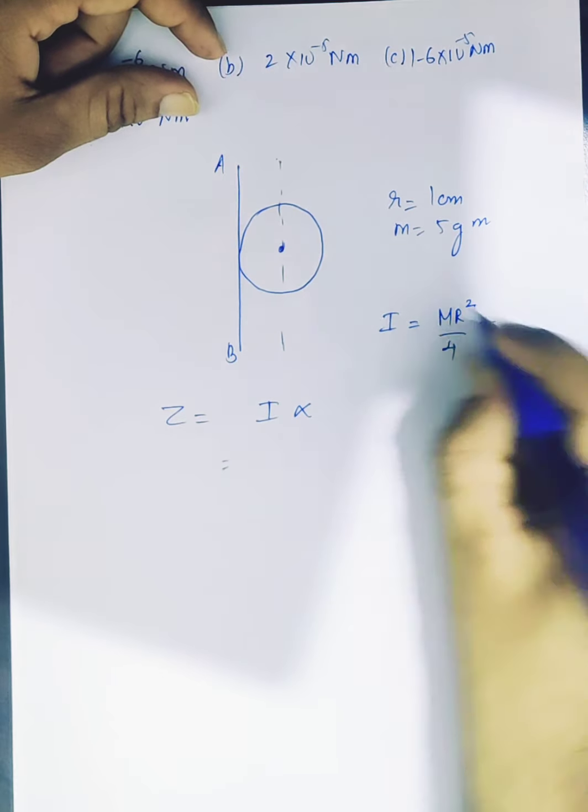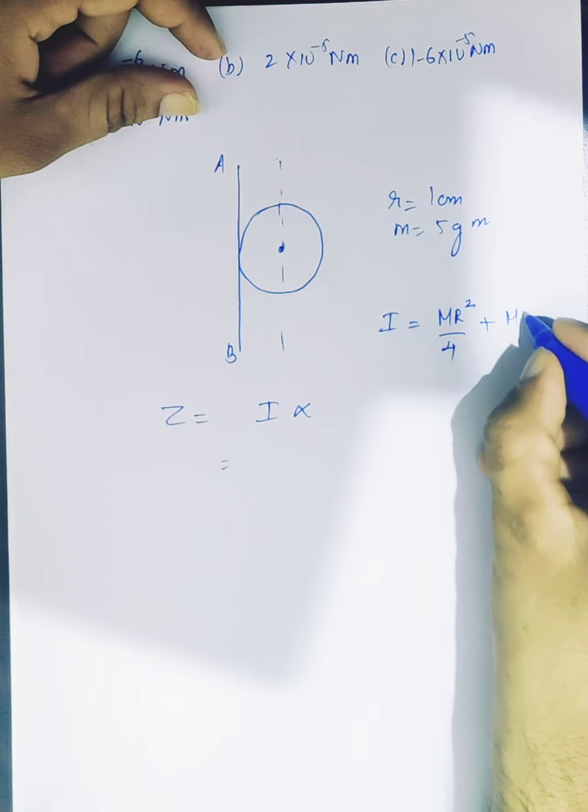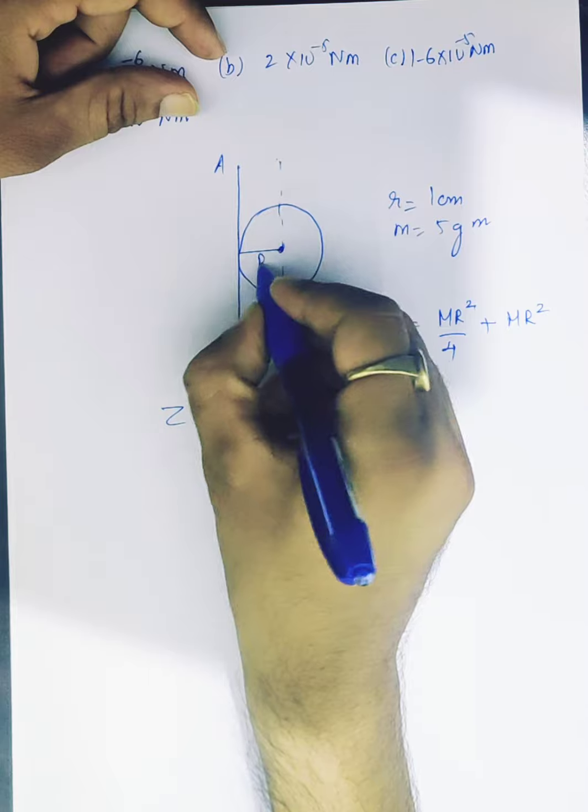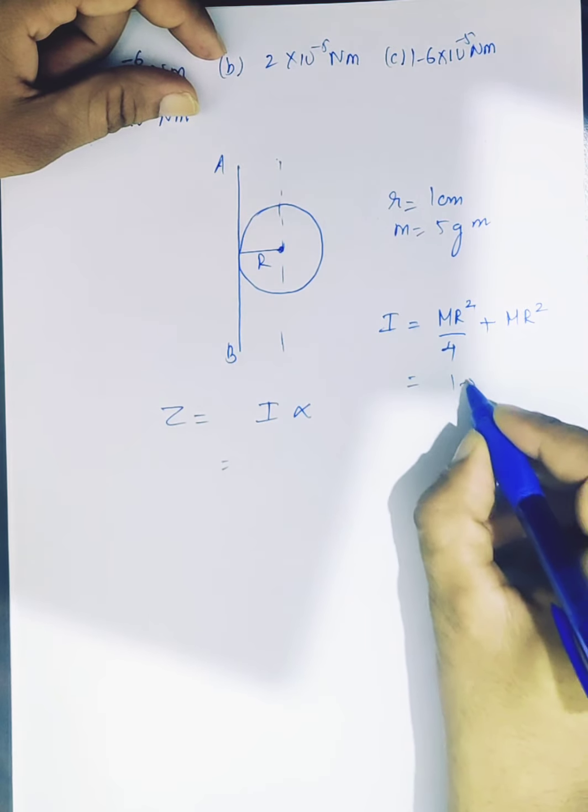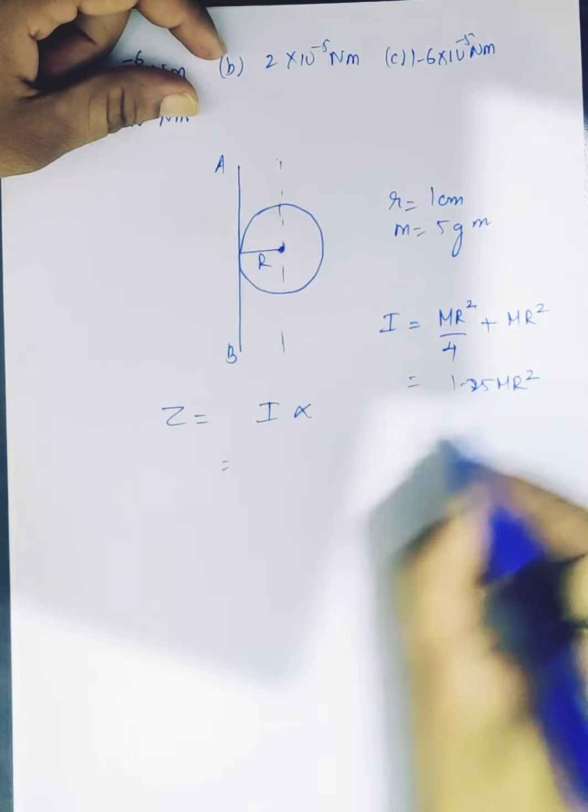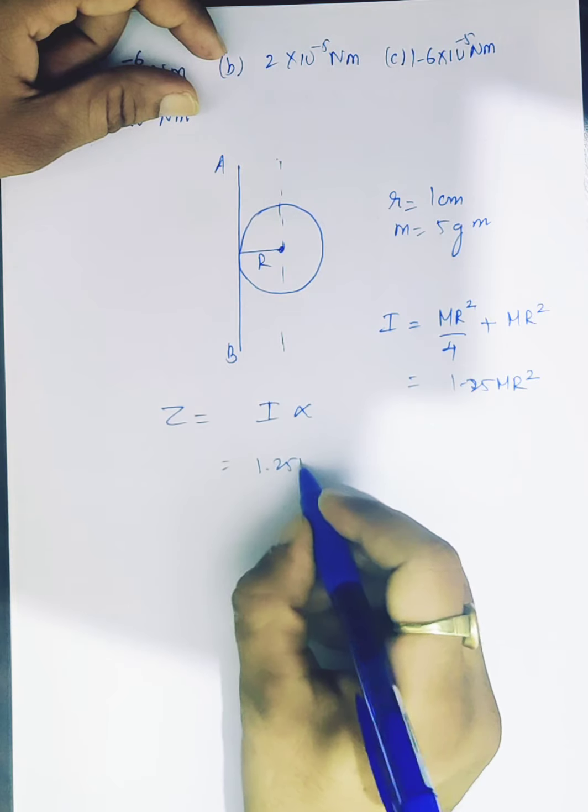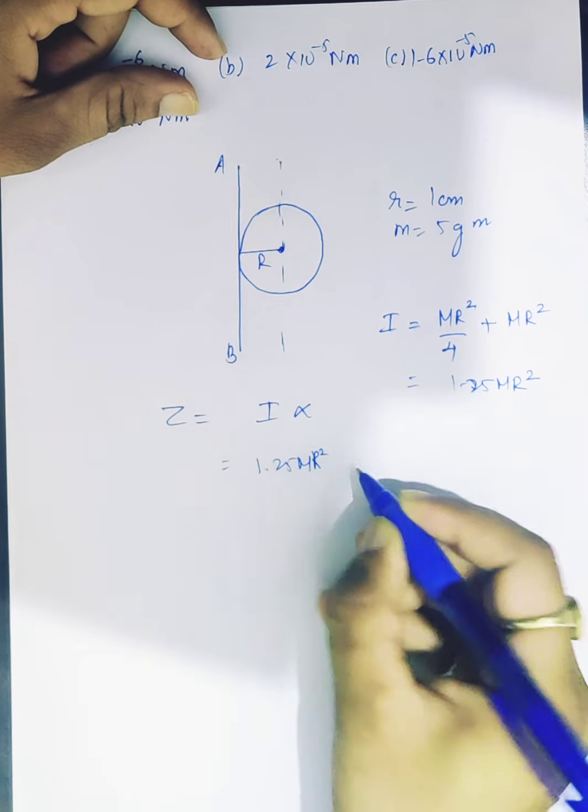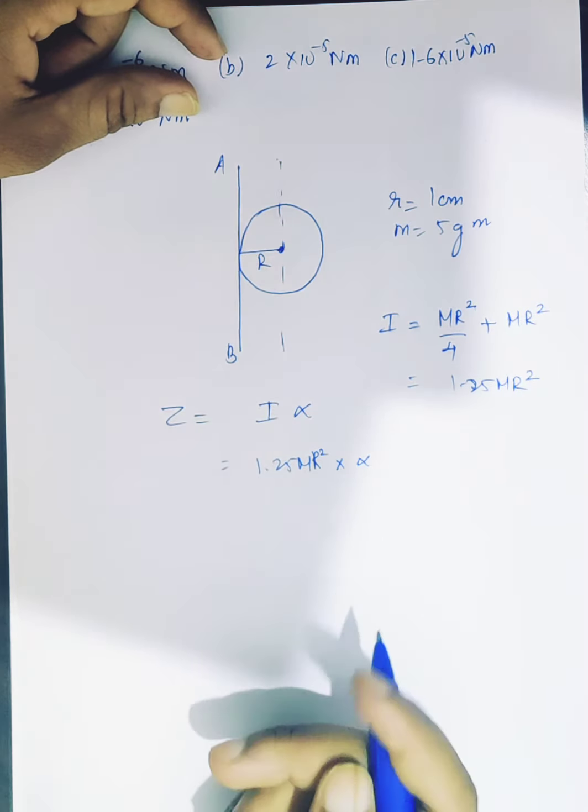But we have parallel axis theorem to the edge. So mass into radius square, because the distance between the two axes is equal to the radius. So it is 1.25 MR square into alpha. Alpha we have to find.